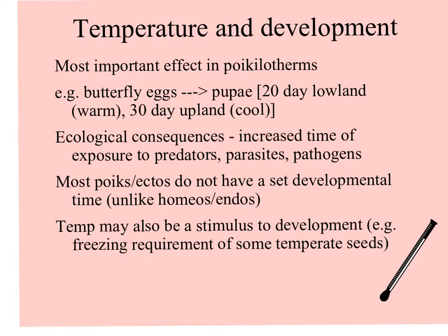What's very interesting about poikilotherms and ectotherms is they don't have a set developmental time. Depending on the conditions under which they develop, the length of time may be shorter if it's warmer, or longer if it's cooler. Homeotherms or endotherms, on the other hand, do have a set developmental time — nine-plus months for humans, a couple of years for elephants.